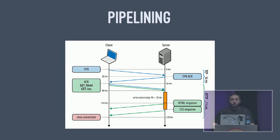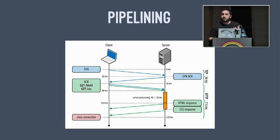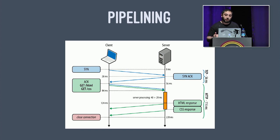HTTP 1.1 also introduced pipelining — extending keep-alive by saying 'I know I need these three files, give me all three at once.' This runs into the head-of-line problem: the server must respond with files in order and can't intermix sending them, so you lose much of the expected benefit because you can't multiplex. In practice this proved really hard to do well. Browsers like Safari would mix up file names with content, and intermediary proxies would garble responses. So although it has benefits, it's hard to do well and is turned off by default in most browsers.